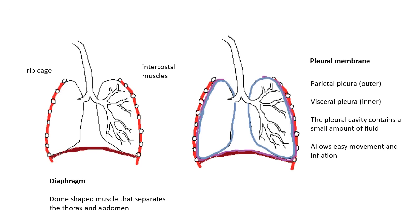Before we talk about breathing, let's talk a bit more about the structure. The whole thing is protected by your rib cage, which are all these bones surrounding — have a feel, that's your rib cage. In between the ribs are intercostal muscles, which help with breathing. And the diaphragm, which is this dome-shaped muscle between the thorax and the abdomen.